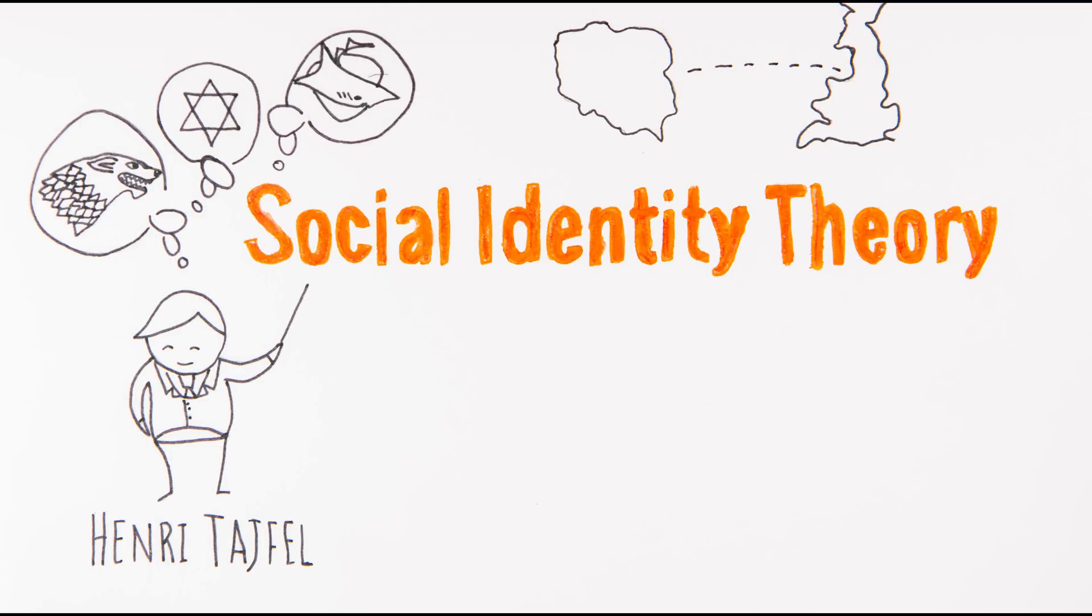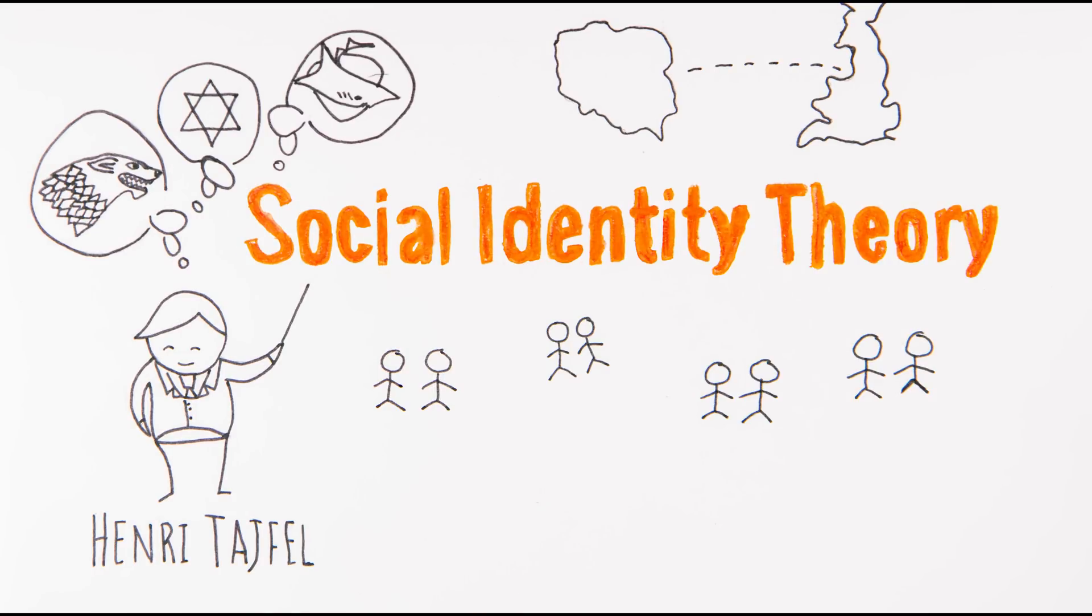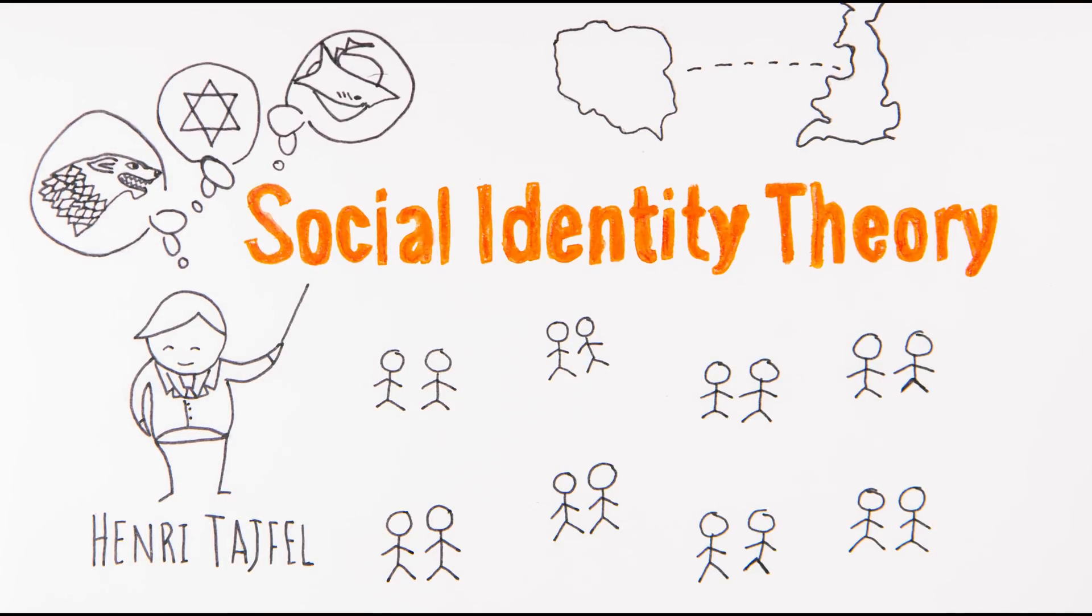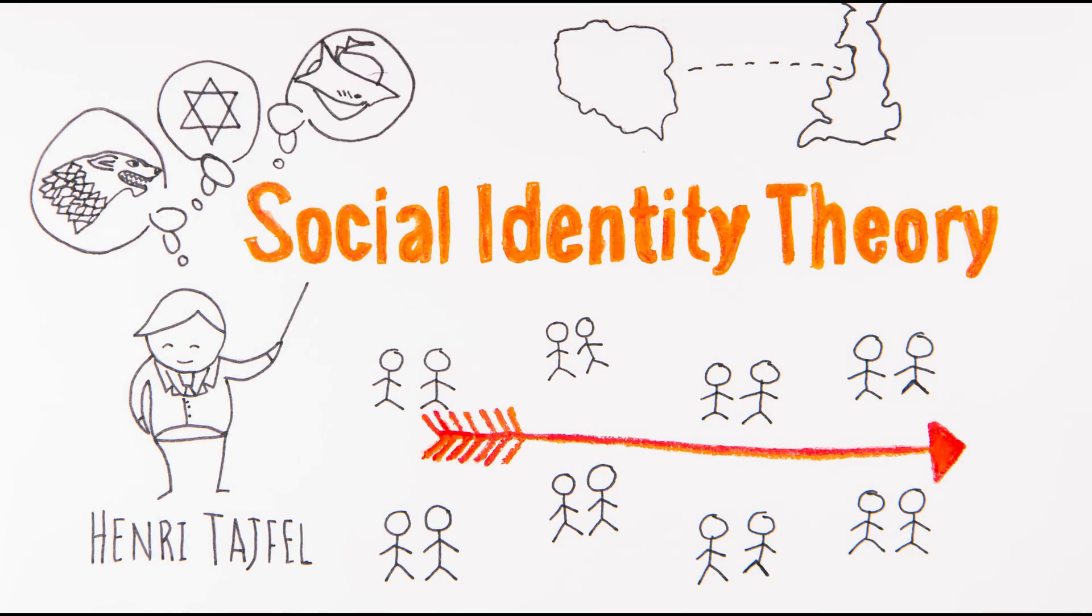Tajfel immigrated to Britain, where he later ran the classic minimal group experiments. Participants were divided into groups completely randomly and asked to allocate a reward. They immediately showed favoritism towards those in their own group and maximized their own group's outcome. A trivial division between people was enough to trigger discriminatory behavior.